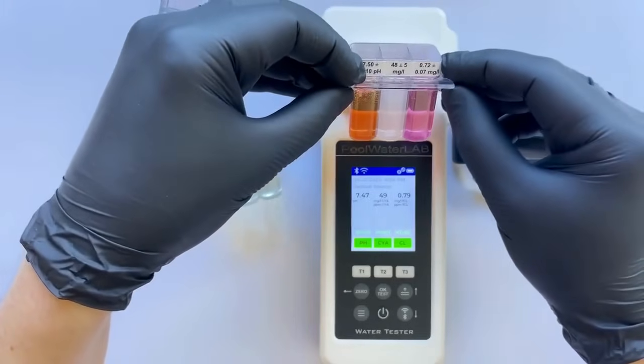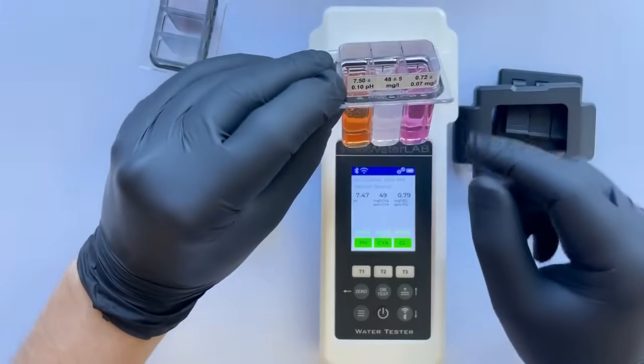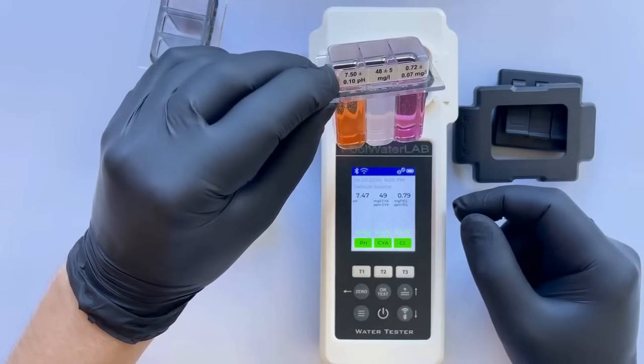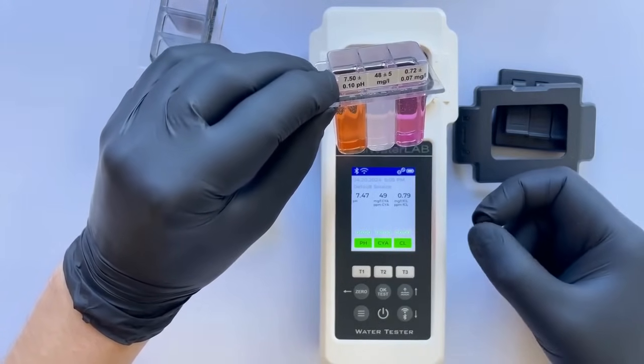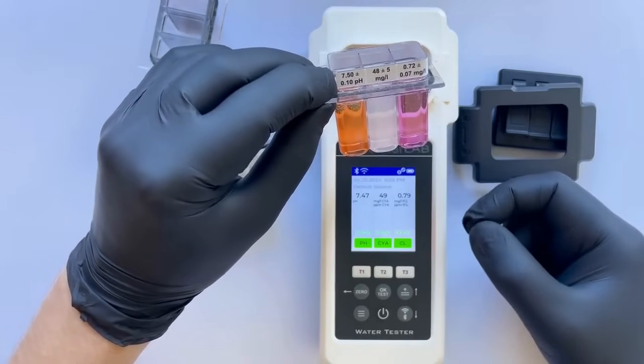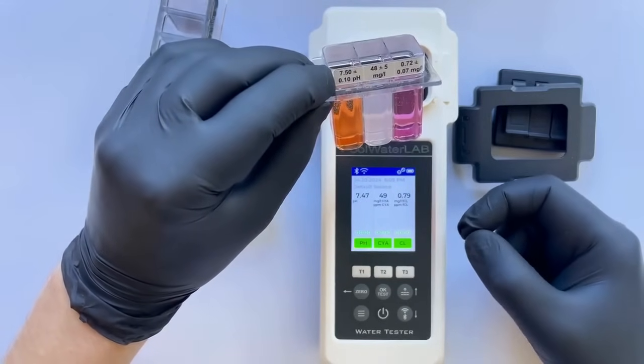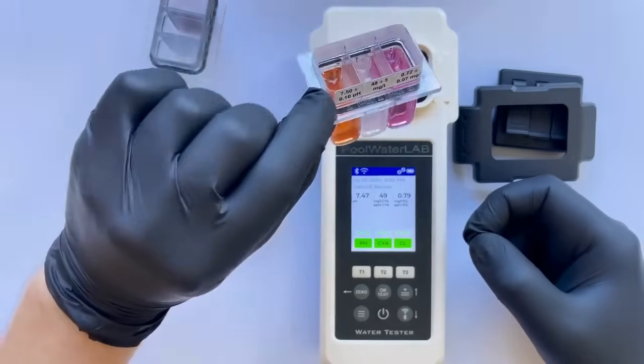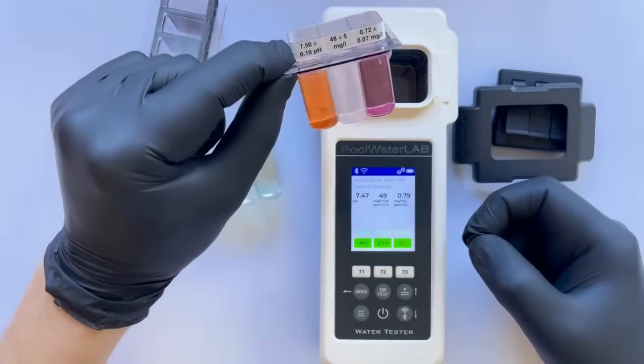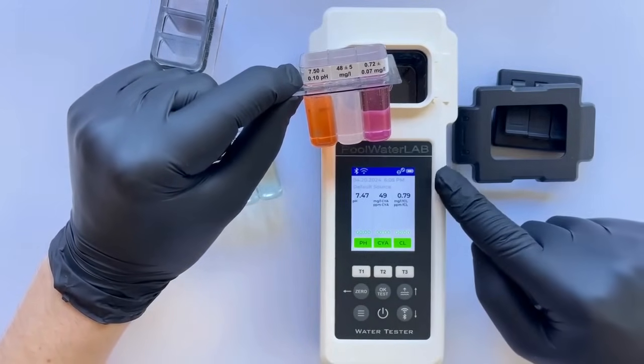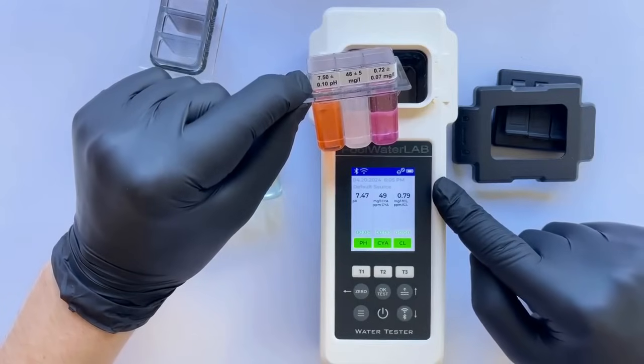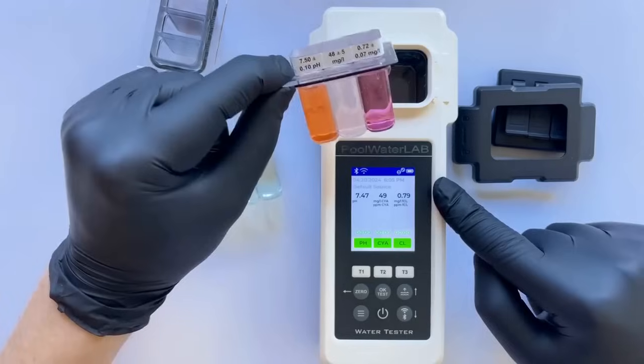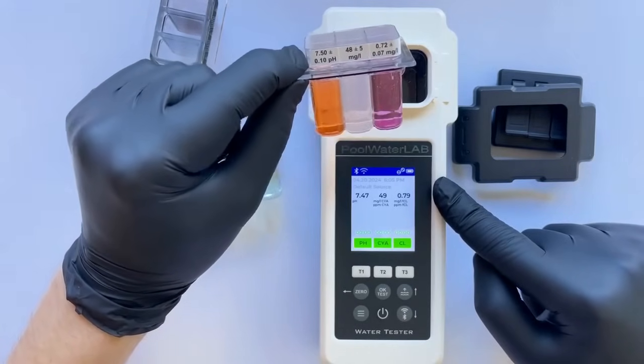Therefore, we can conclude that the tester meets the L1 accuracy level, the highest standard of precision currently accepted in the USA. For reference, the L1 accuracy level permits an allowable error margin of plus or minus 12%. This range is considered acceptable for ensuring reliable and accurate results within the defined standards for precision. However, we observe that the pool water lab tester demonstrates significantly less deviation than what is typically allowed for L1. This precision exceeds standard expectations, highlighting the tester's superior performance in ensuring highly accurate water quality measurements.